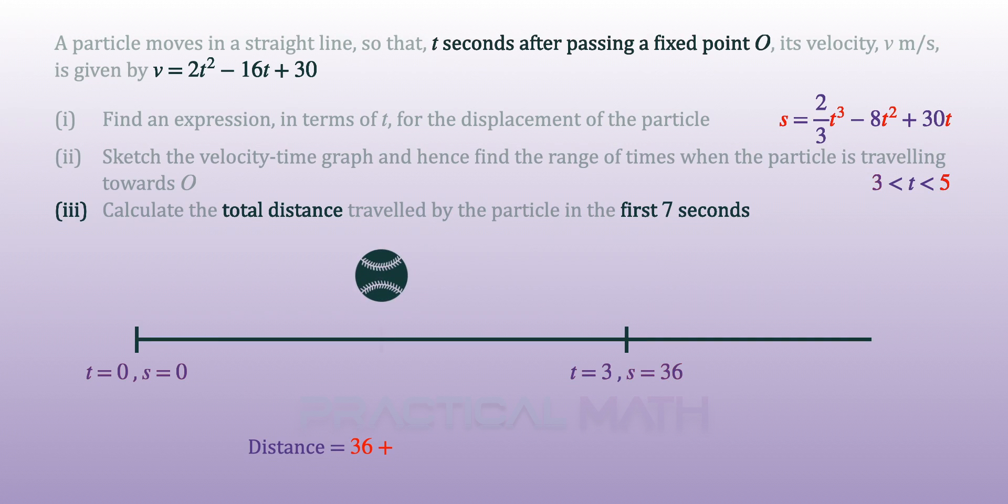Likewise, from part 2, we found that the particle is at instantaneous rest when t equals 5. Replacing t to be 5, our displacement is 33 and 1/3. The displacement for this part of the journey will be taking the bigger displacement minus the smaller displacement.